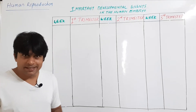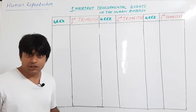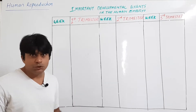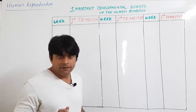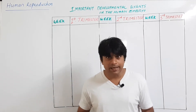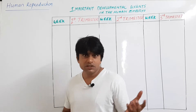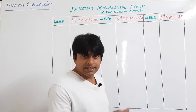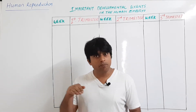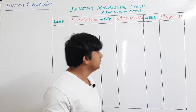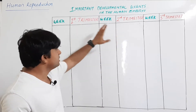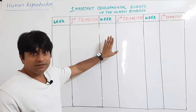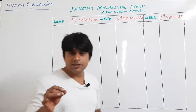Hello everyone, this lecture is about human gestation and the various developmental stages that take place during human pregnancy. The average duration of human pregnancy is 9 months, or 266 days, which is called the gestation period. This gestation period is divided into three equal periods called three trimesters: first, second, and third trimester.